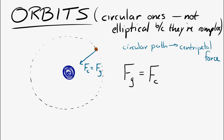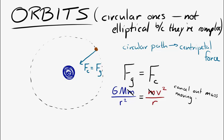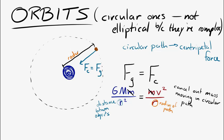We have equations for each of those, so let's substitute: GMm over r squared equals mv squared over r. We can cancel out one of the masses — the mass of the object traveling in the circle, in this case the moon. The r in both equations turns out to be the same thing. The r in Newton's universal law is the distance between the two objects, and the r in centripetal force is the radius of the circular path — numerically they're the same here.